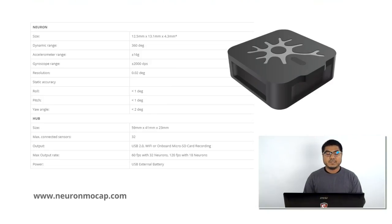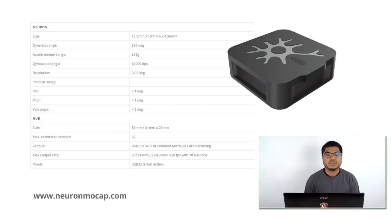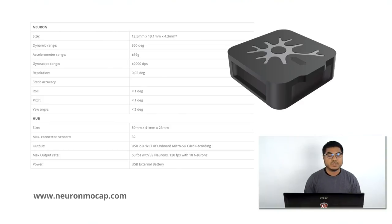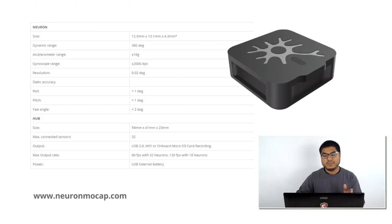On our website, NeuronMoCap.com, we have information and details about the sensors. That includes typical information like size, dynamic range, accelerometer range, resolutions, and very technical information for everyone to check out. Definitely look at that information there.